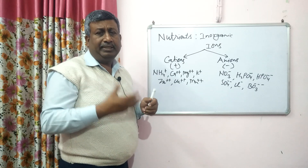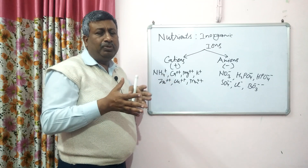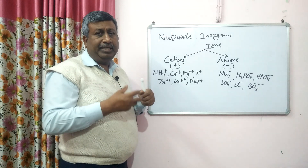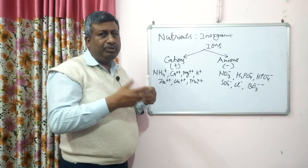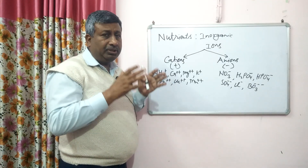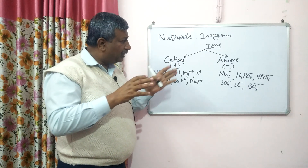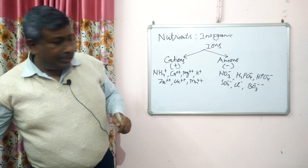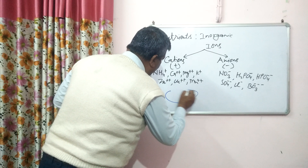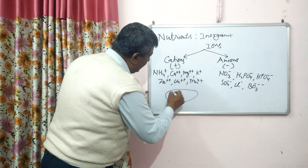Once nutrients are in ionic form in the soil solution, they come into contact with soil particles — particularly clay particles. Clay particles carry a negative charge due to isomorphic substitution, along with some pH-dependent charge.